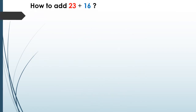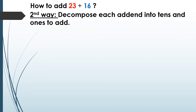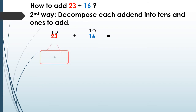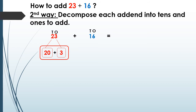Same example — how to add 23 plus 16. The second way is to decompose each addend into tens and ones. To add 23 plus 16, let's decompose those numbers first. I'm gonna decompose 23 — let's read the number very slowly, as we did before.